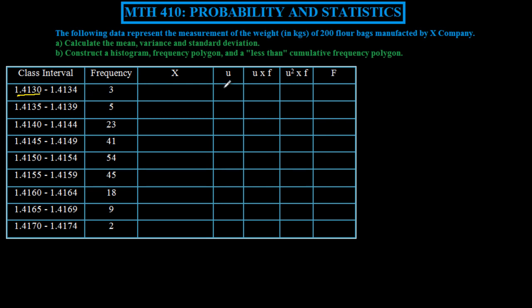These intervals get condensed into a code which we denote as u, and we deal with u's and the frequencies to figure out our mean, variance, and standard deviation. Then we'll go into graphical representation of these values. Let's begin this question, part A.